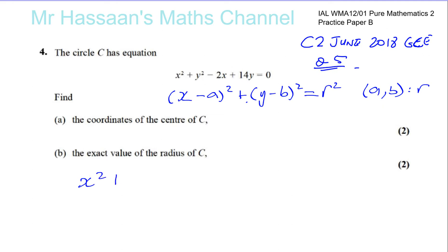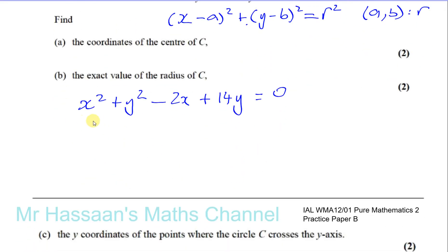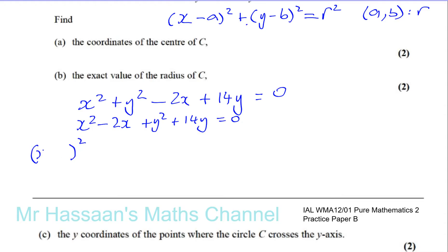Starting with x squared plus y squared minus 2x plus 14y equals 0, I'll group the x terms and y terms separately and complete the square. For x squared minus 2x, completing the square gives (x minus 1) squared, because the half-coefficient of x is 1. Expanding this gives x squared minus 2x plus 1, but there's no plus 1 in the original, so I have to subtract 1.